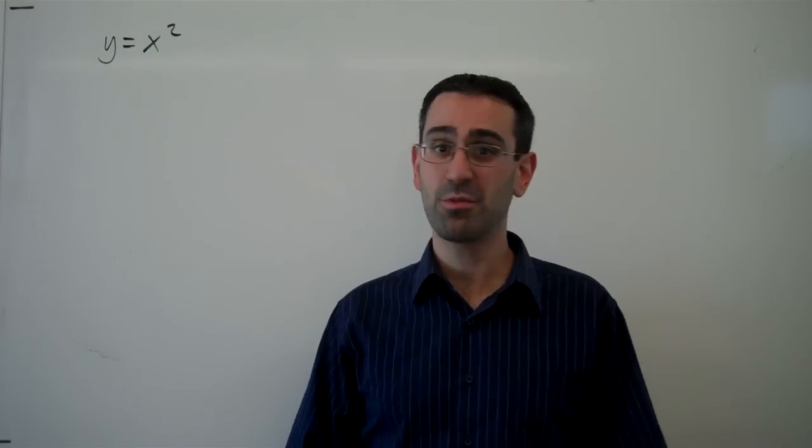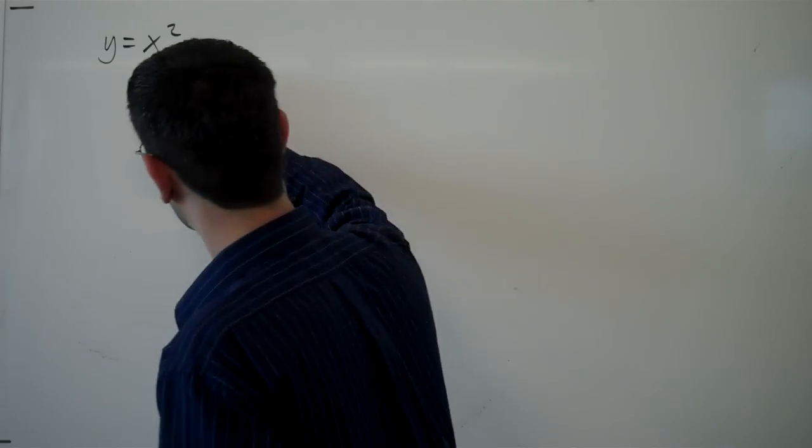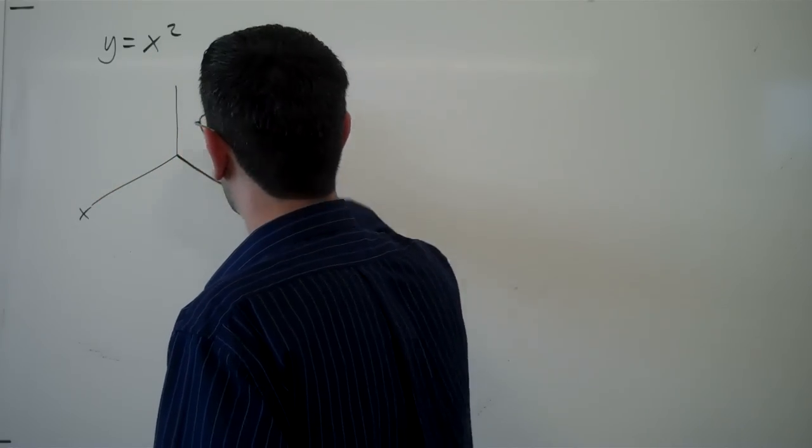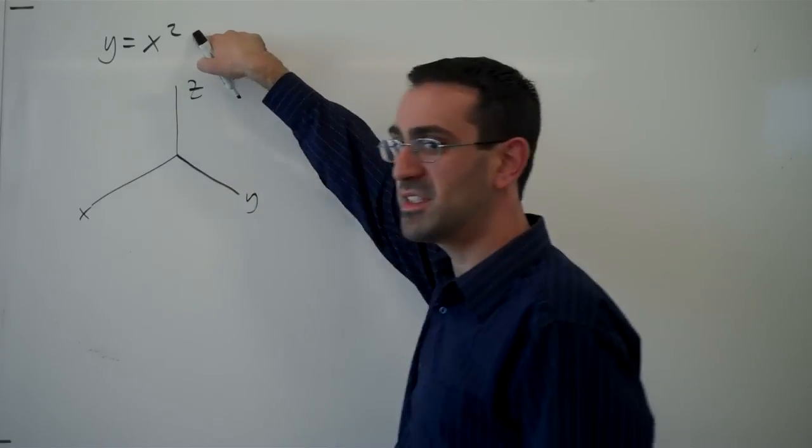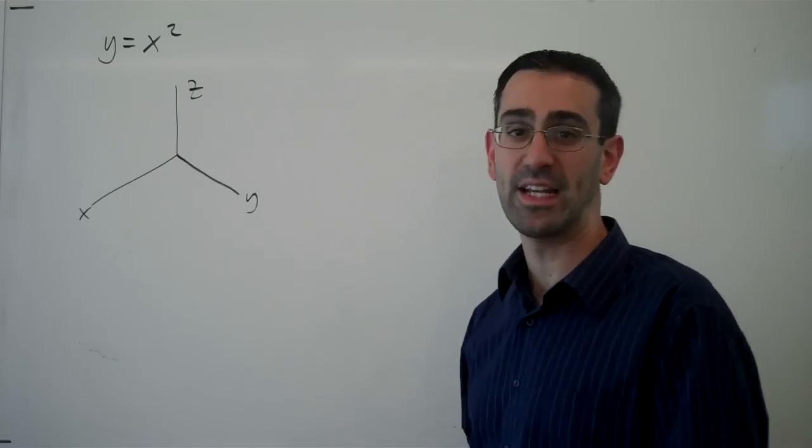But in three-dimensional space, we have three directions in which the variables can change: the x, y, and z directions. And so when a variable is missing in an equation, we have to assume that that variable can take on any value.